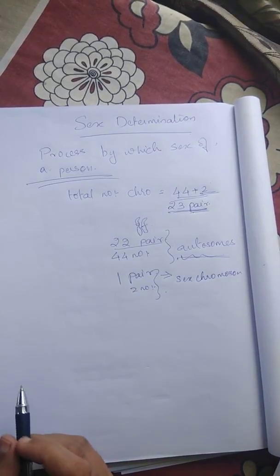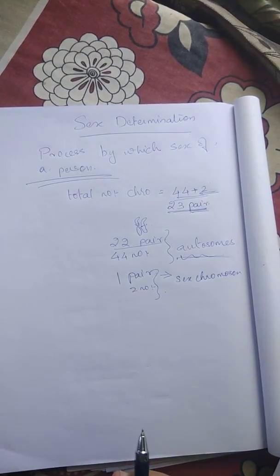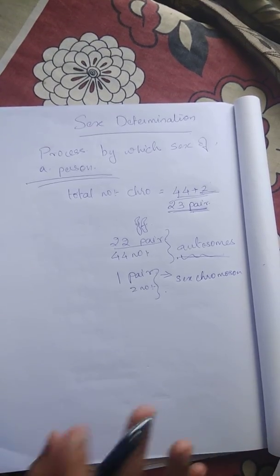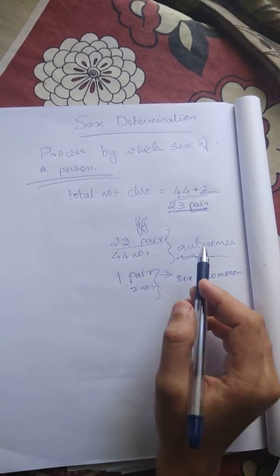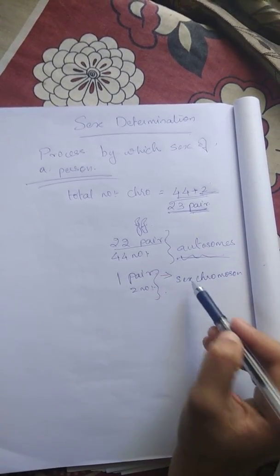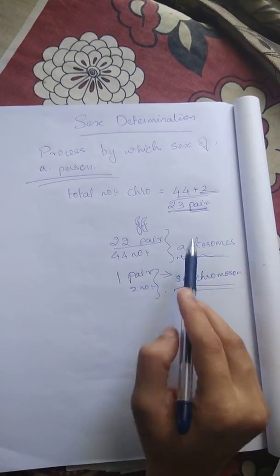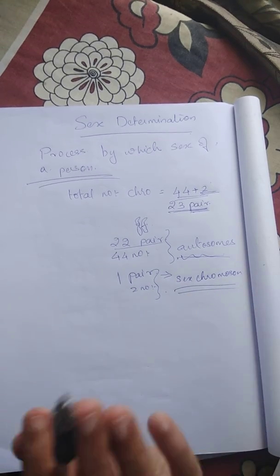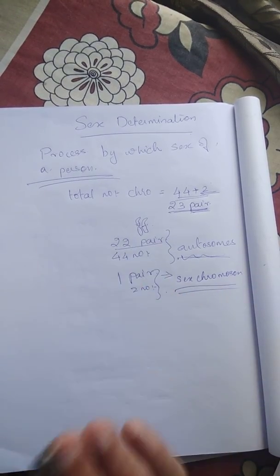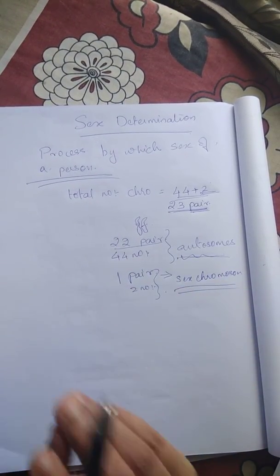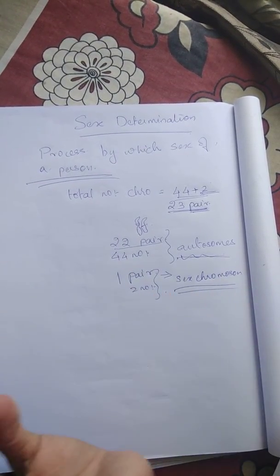There is a difference only in the sex-determining chromosome, which is the sex chromosome. All of the autosomes are the same between males and females.